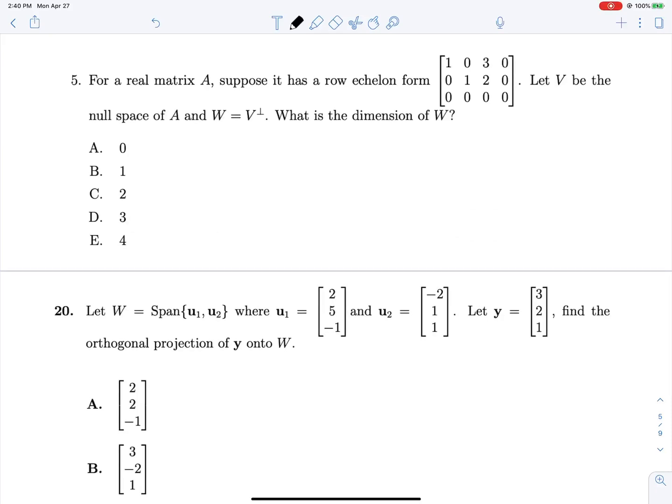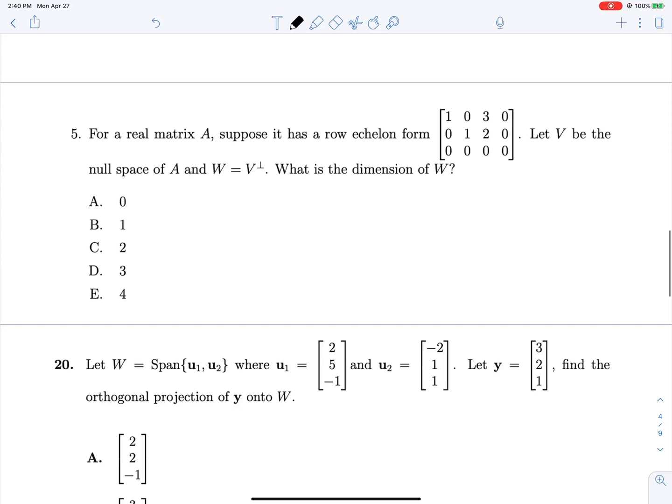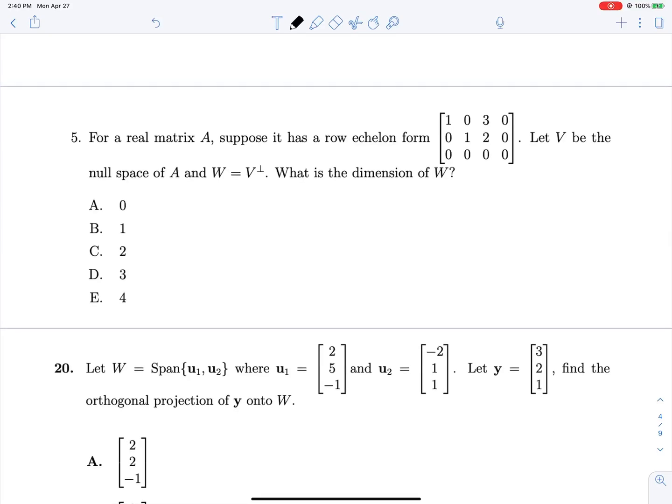For a real matrix, suppose its row echelon form is given here. Let V be the null space of A, and W be the orthogonal complement of that null space. What is the dimension of W? The orthogonal complement to the null space is the row space, and the dimension of the row space equals the rank of A transpose, which equals the number of pivots in A. So our answer is 2.